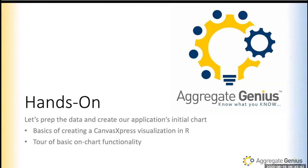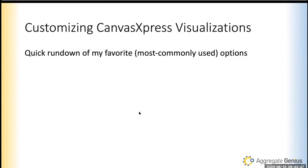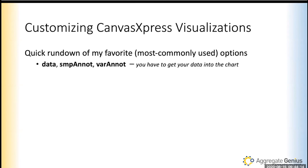We've seen a basic bar chart — not very exciting, but let's do a quick rundown of the most commonly used options. To get your data into the chart, you use three variables: data (the main dataset), sample annotation, and bar annotation. That's where the row/column terminology comes into play. There's the graph type — the sky is almost the limit, from pie charts to word clouds to network diagrams. The graph orientation can be horizontal or vertical. Always include titles, subtitles, and axes titles to tell your user what they're looking at.